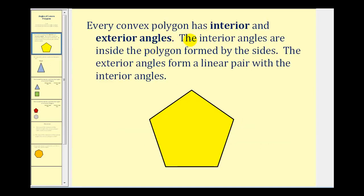Every convex polygon has interior and exterior angles. The interior angles are the angles inside the polygon formed by the sides. So for this pentagon, there are five interior angles: angle one, angle two, angle three, angle four, and angle five.